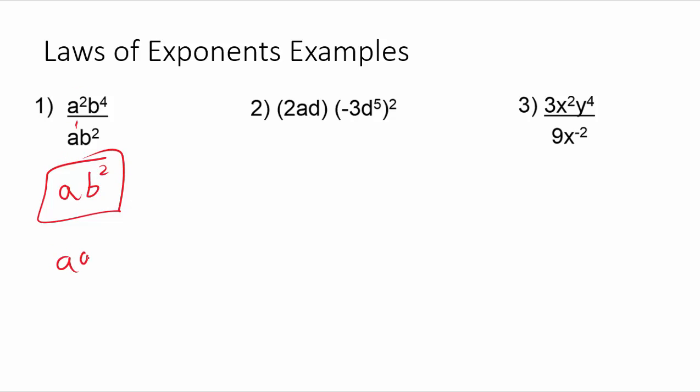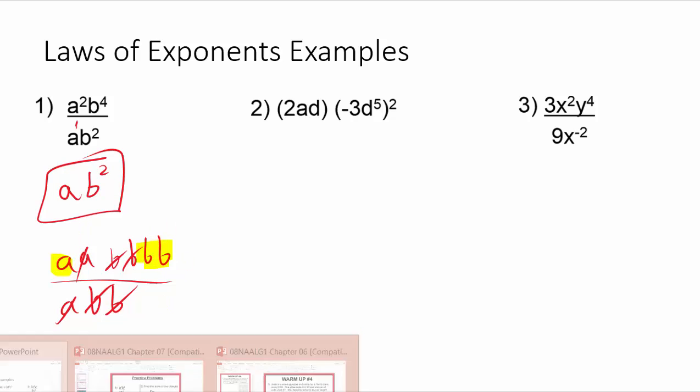Again, that works like canceling. It's the exact same thing as if I had written this whole thing out, and I canceled two b's here, I canceled one a here. You'll notice that I'd be left with an a and two b's left, so that'd be ab squared.